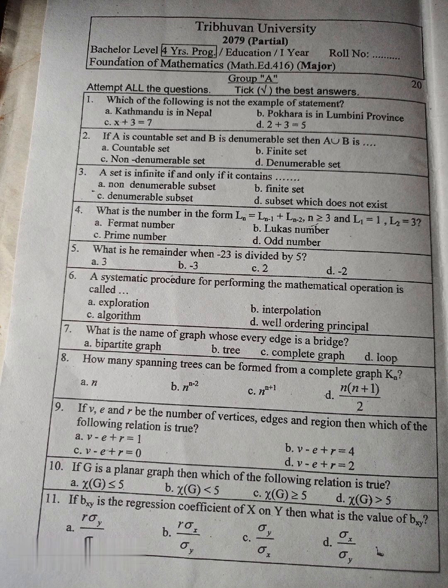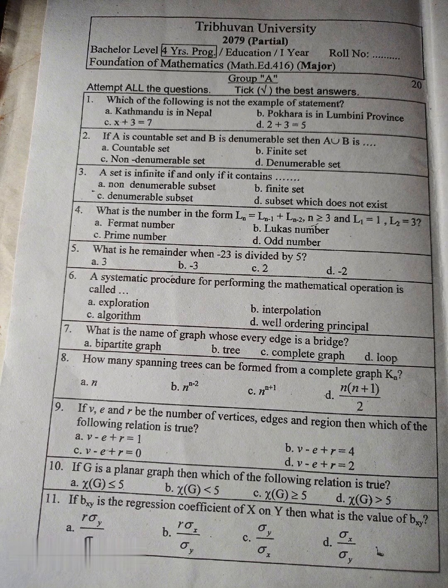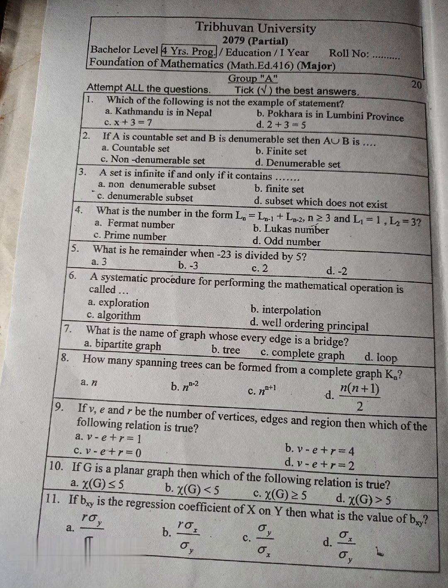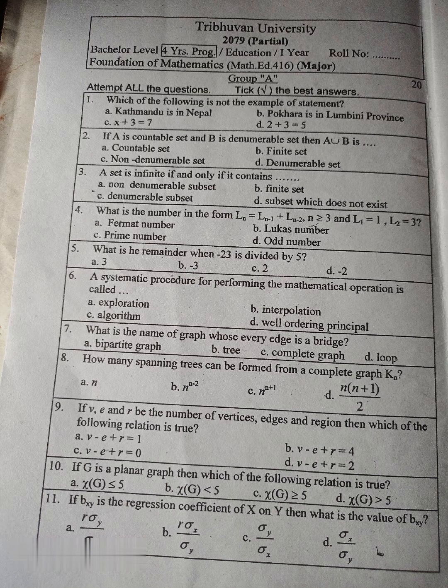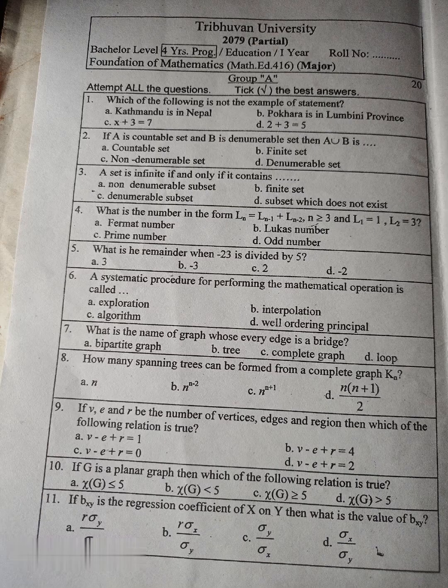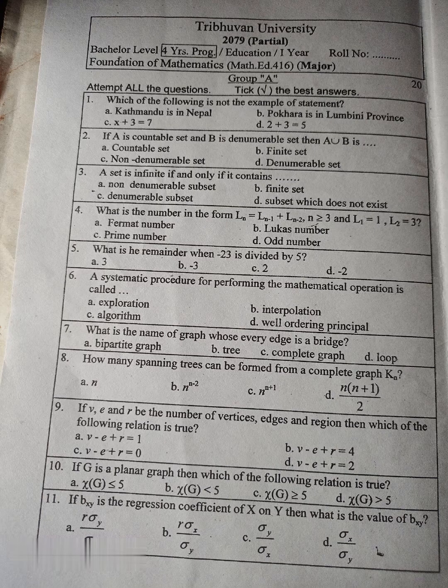Group B has 56 marks, and Group C is 24 marks. Group A, attempt all the questions, tick the best answer. Question number 1: Which of the following is not the example of statement? A. Kathmandu is in Nepal, B. Pokhara is in Lumbini Province, C. X plus 3 equal to 7, D. 2 plus 3 equal to 5.